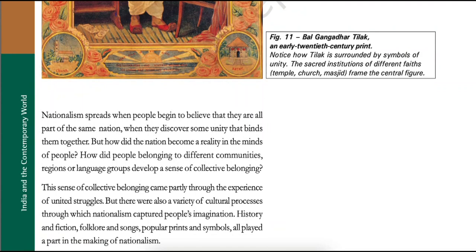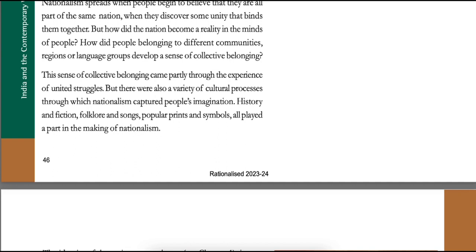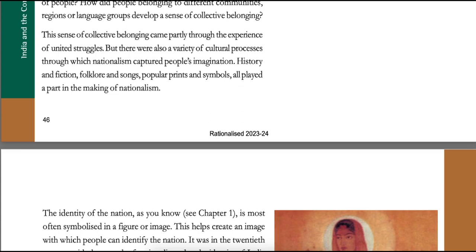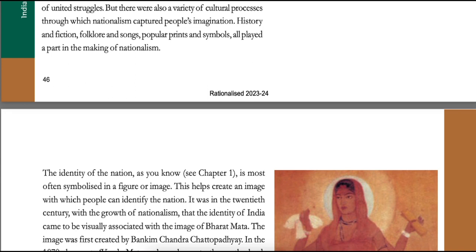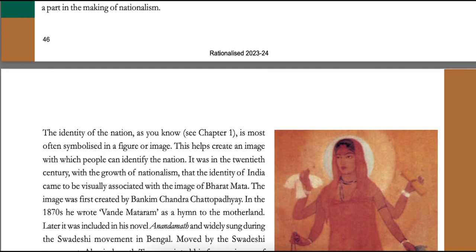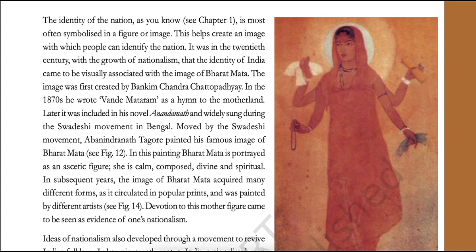Nationalism spread when people begin to believe that they are all part of the same nation, when they discover some unity that binds them together. But how did the nation become a reality in the minds of people? How did people belonging to different communities, regions or language groups develop a sense of collective belonging? This sense of collective belonging came partly through the experience of united struggles, but there were also a variety of cultural processes through which nationalism captured people's imagination. History and fiction, folklore and songs, popular prints and symbols all played a part in the making of nationalism. The identity of a nation is most often symbolized in a figure or image. It was in the 20th century with the growth of nationalism that the identity of India came to be visually associated with the image of Bharat Mata.